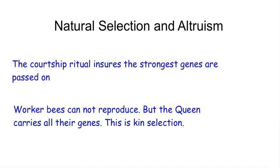Finally, natural selection and altruism. Natural selection is where bees try to increase the genetic strength of the hive. The courtship ritual guarantees that the strongest drones pass on their genes to the queen. Altruism happens a lot in bees because worker bees are sterile — the queen is the only one who can breed, but she is genetically very similar to all the other bees, carrying all their genes. This is called kin selection. Worker bees will often sacrifice themselves to protect the queen. For example, when a honeybee stings somebody it dies, but it doesn't matter because the hive survives and their genes get passed on.